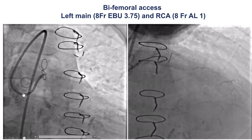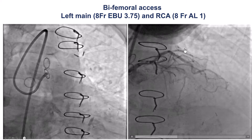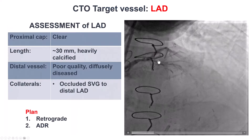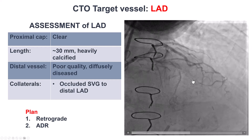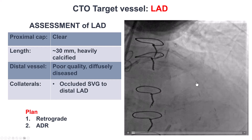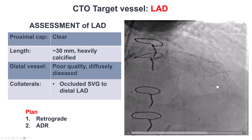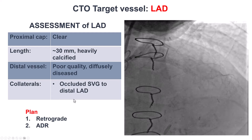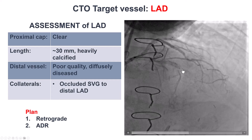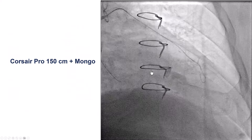We have dual access. We engage the vein graft with an AL guide and the left main with an EBU guide. This is a long occlusion. The distal vessel is poorly visualized, there is heavy calcification, and there is tortuosity. Our plan was to try retrograde again and potentially do reverse CART in a different segment than before to facilitate externalization of the retrograde wire.